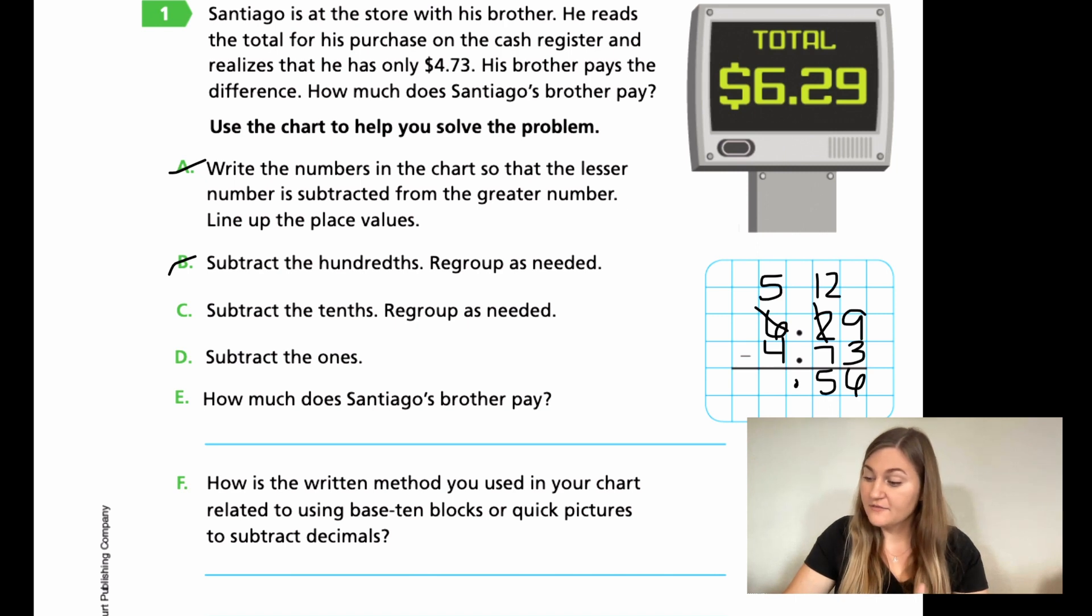Alright. So then five minus four is going to be one. And we just subtracted the ones. So how much does Santiago's brother pay? He paid for his brother $1 and 56 cents. Another way of saying that is that's how much money he was short. He was short $1 and 56 cents.